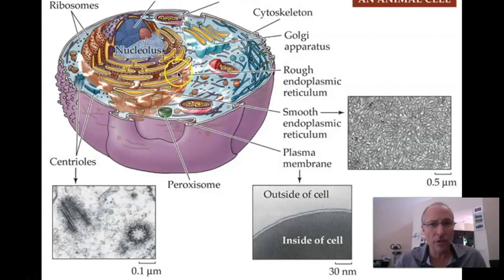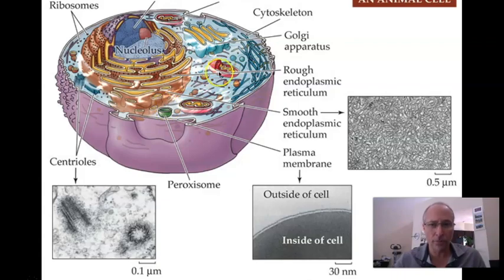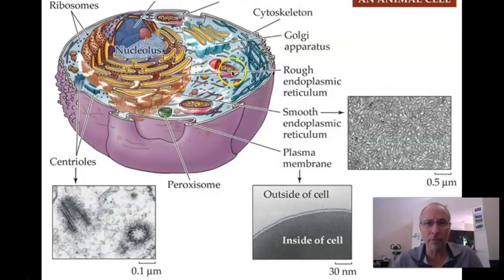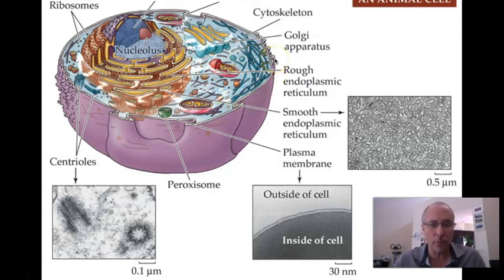The endomembrane system is extremely active, and it's where most of the protein processing takes place. Other structures, like the mitochondrion, aren't strictly part of the endomembrane system, even though they have membranes around them. And the outer membrane is not part of the endomembrane system because it's not endo — endo means inside.